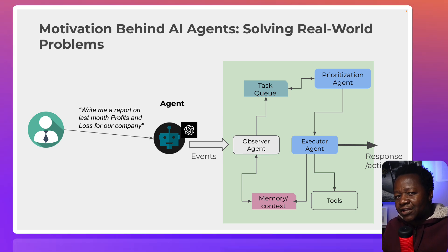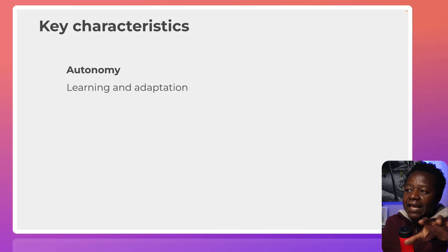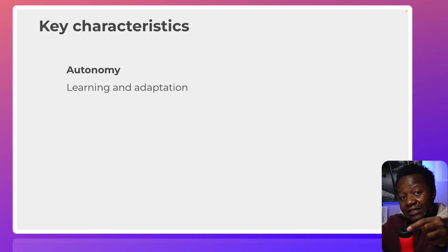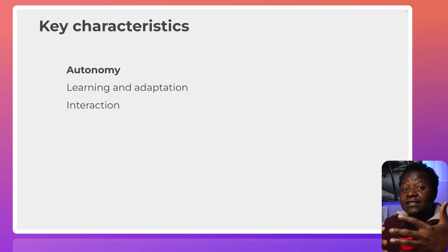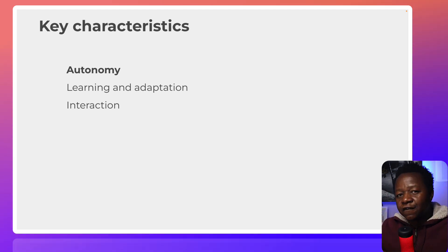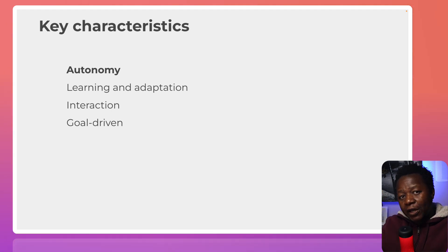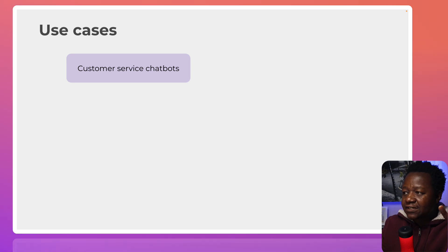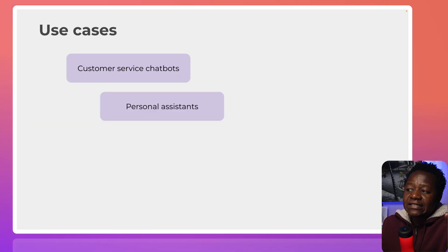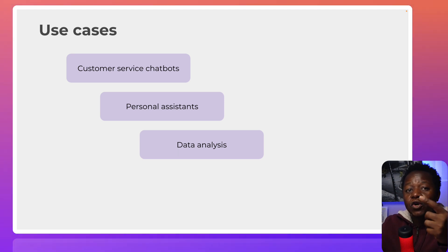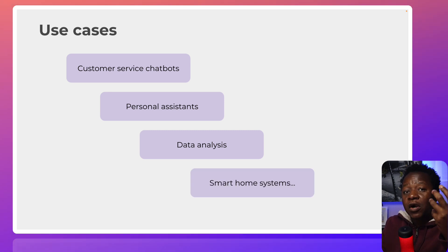The main characteristics of agents: they are adaptable — they can learn from the system and adapt themselves. They are interactive — they interact not only with users but also with other agents, so you can create a fleet of agents that interact with each other to do certain tasks. And they are goal-driven — just told to do X, Y, and Z, and they go do exactly that. Use cases include customer service chatbots, personal assistants, data analysis, and smart home systems.